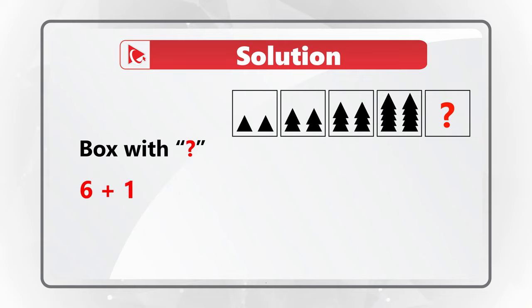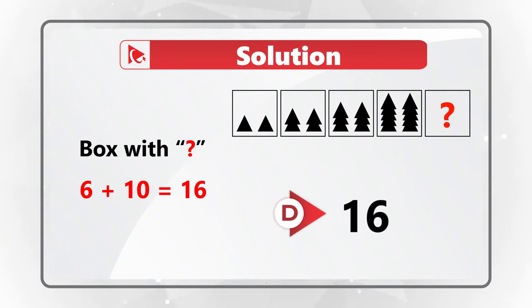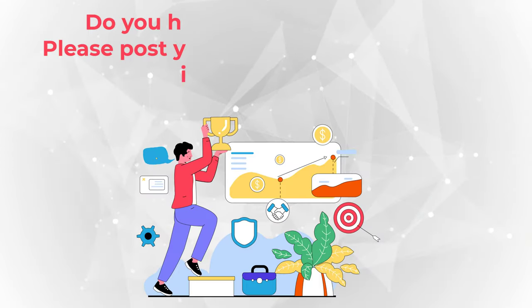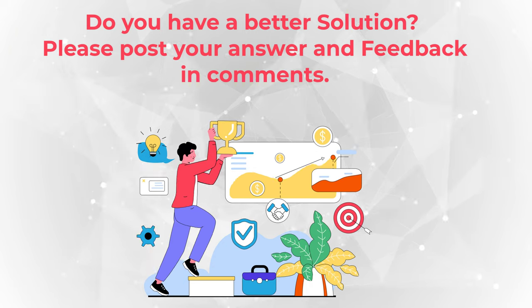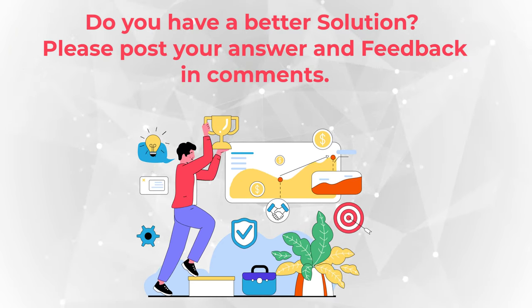Based on this logic, to calculate the number of triangles in the last box, you add six plus ten, which equals 16 triangles. So the correct answer is choice D, 16 triangles. Hopefully you nailed this question on your own and now know how to answer similar problems on the test.